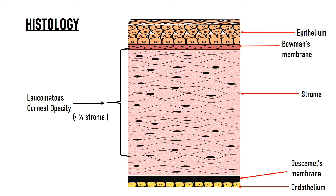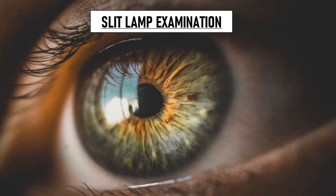It is important to know how to differentiate between these opacities on clinical examination. It is very easy to miss nebular corneal opacities on torchlight examination because they are very faint. To identify them clinically, slit lamp examination must be done on all patients, as it gives us a magnified view of the cornea.